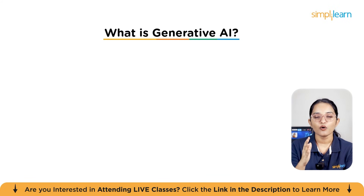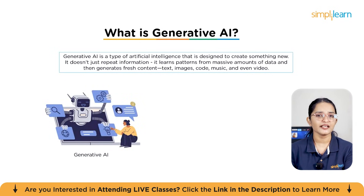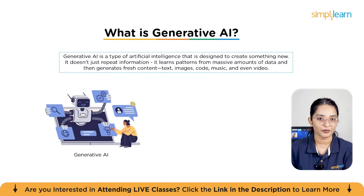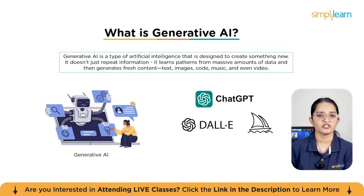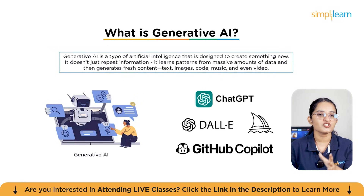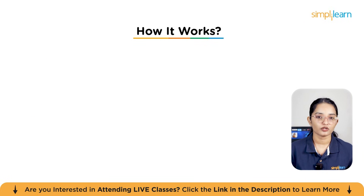Let's start by understanding what generative AI is. Generative AI is a type of artificial intelligence designed to create something new. It doesn't just repeat information — it learns patterns from massive amounts of data and then generates fresh content: text, images, code, music, and even video. Think of ChatGPT, Midjourney, or DALL-E. You give a prompt and they create an output. If I say 'write me a bedtime story about a space-traveling cat,' it will instantly write one. That's generative AI in action.